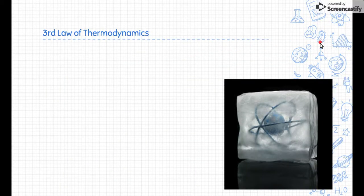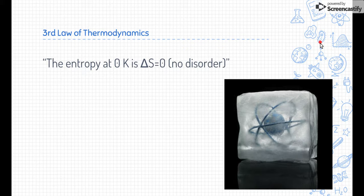Finally, let's talk about the third law of thermodynamics. The third law says that the entropy at zero Kelvin is where entropy is zero. If you have an entropy of zero, then you have absolute order. There's no disorder in the system.